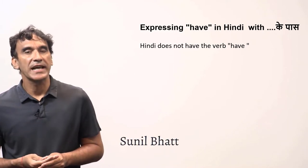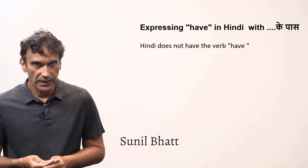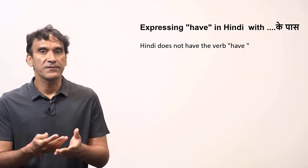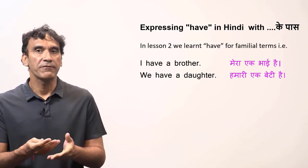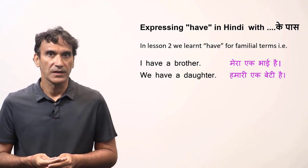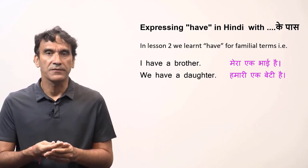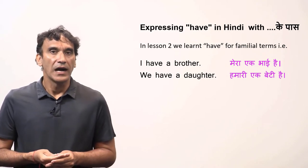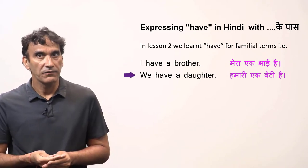The next grammar point is expressing 'have' in Hindi with the postposition 'ke paas.' As you know, Hindi does not have the verb 'have' — it has different ways of expressing its meaning. In the second lesson, we learned how to express the verb 'have' for familial relations. Hindi uses possessive pronouns to express familial relations — 'I have a brother' and 'we have a daughter' would use those forms.